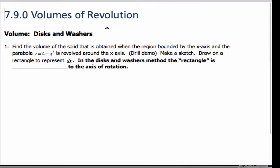Okay, so today we're going to talk about volumes of revolution. And the particular method we're going to discuss is what we call the disks or washers method. Imagine we have the parabola y equals x squared, or y equals 4 minus x squared, which looks like this.